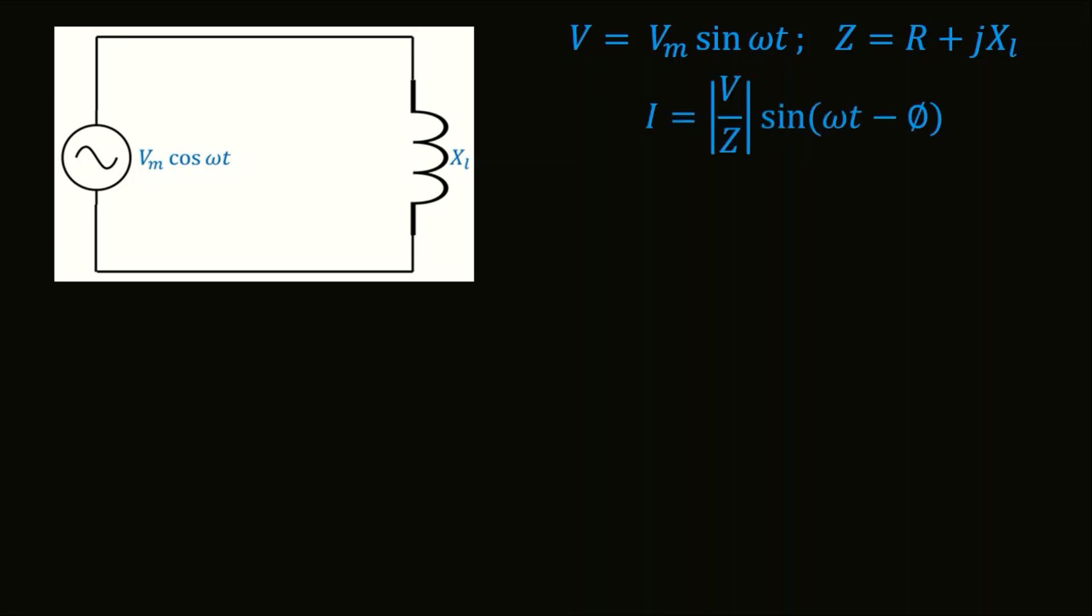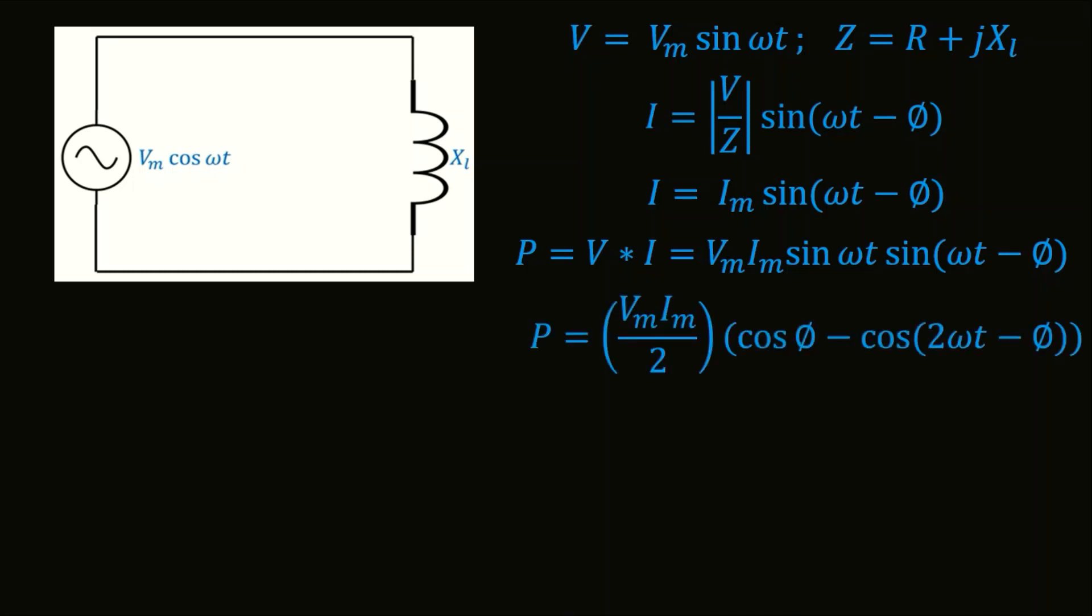The current will be shifted by an angle φ. The instantaneous power for this system is given by substituting V and I in this equation. And with simple trigonometric manipulations, we obtain this generalized formula when the impedance contains both R and X.